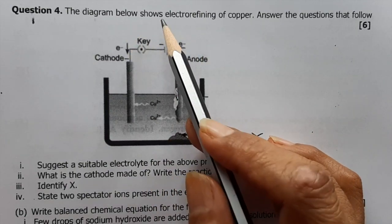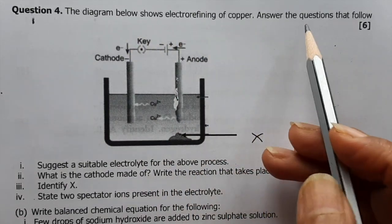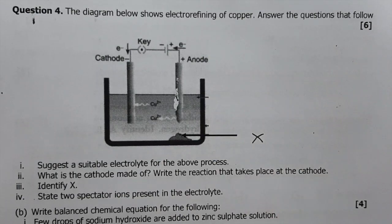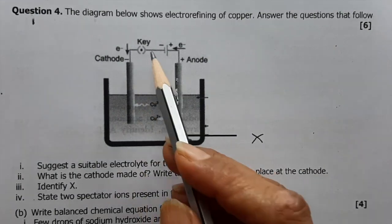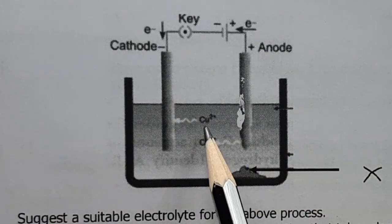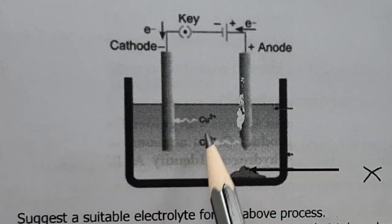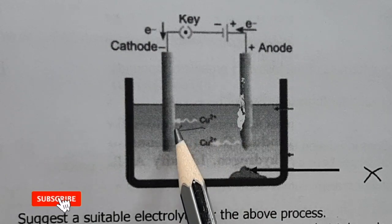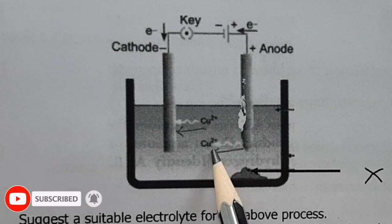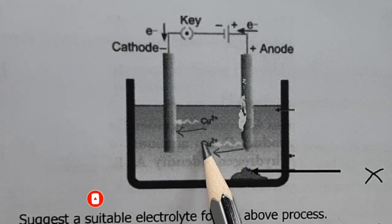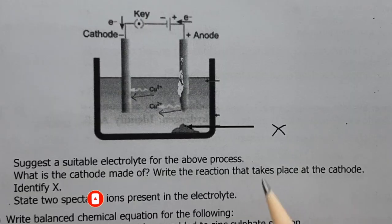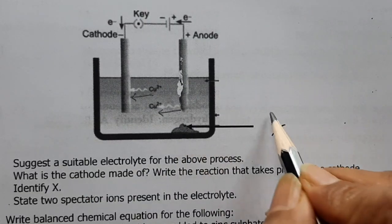Question 4: Electro-refining of copper. The diagram shows a cell with cathode and anode; Cu²⁺ ions travel toward the cathode, Cu²⁺ ions are formed at the anode and go into solution, and the impurities form anode mud.